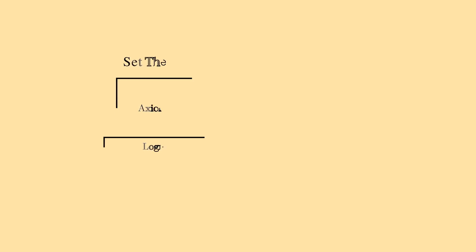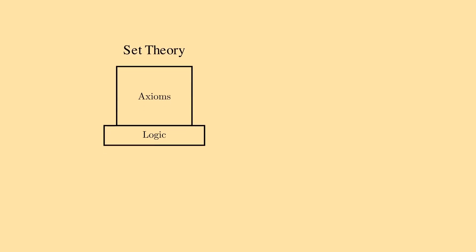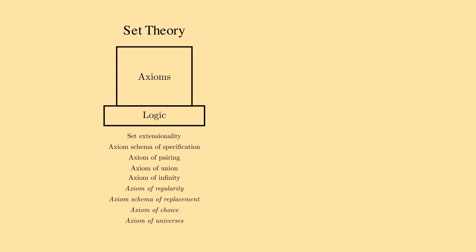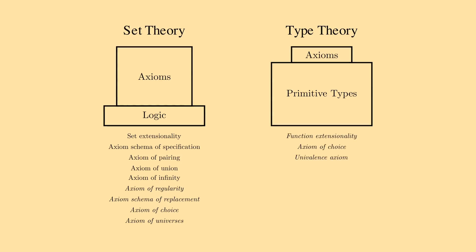Set theory is built by extending a system of logic with axioms, some telling us how to form sets, and some optional ones that enable us to prove more theorems. In contrast, type theory unites logics, sets, and more under primitive types. Primitive types already provide a rich computational theory where we can do plenty of math, and axioms are completely optional.